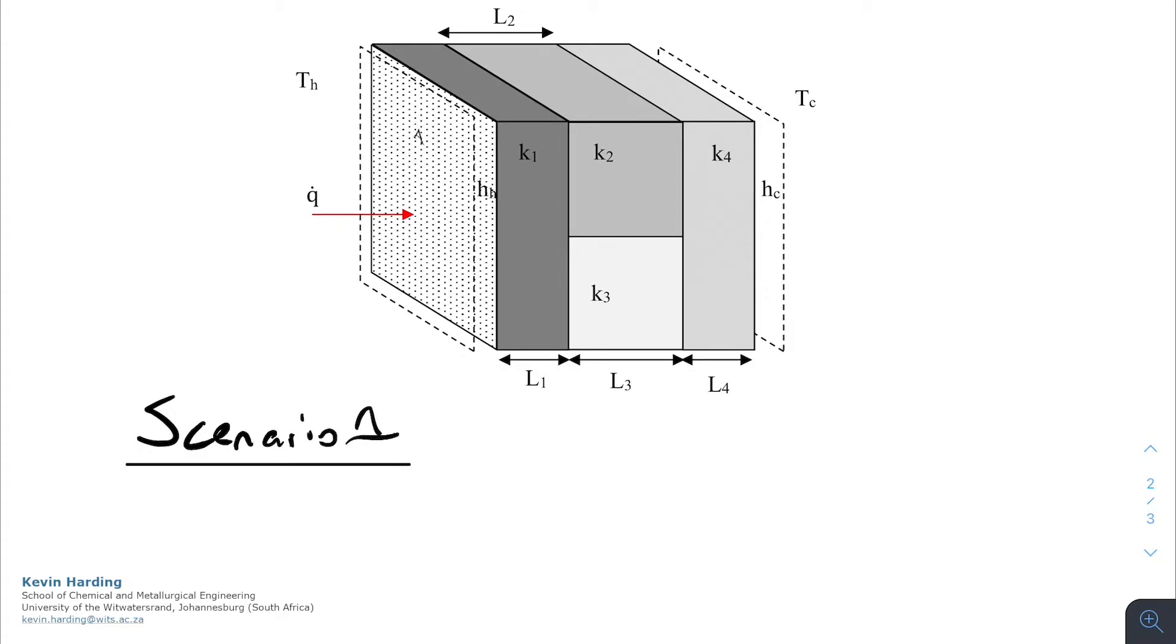In scenario one we are going to assume that the surfaces normal to the direction of the heat flow are isothermal. What this means is that the entire length of slab one and slab four are going to have the same temperature.